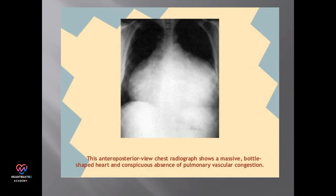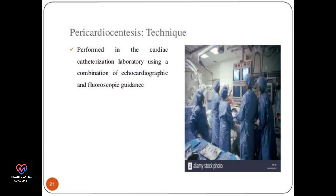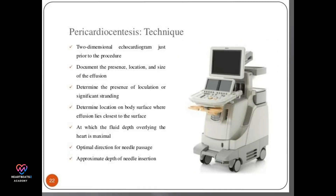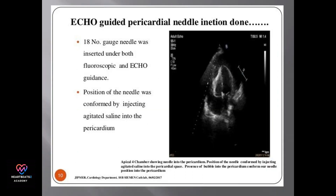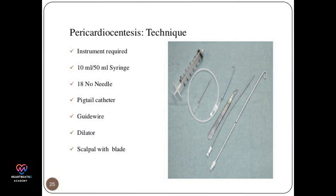A chest radiograph can show a massive heart indicating the need for pericardiocentesis. The technique involves using echocardiographic and fluoroscopic guidance to ensure accurate needle placement. Echo guidance confirms the needle's position by injecting agitated saline into the pericardium.